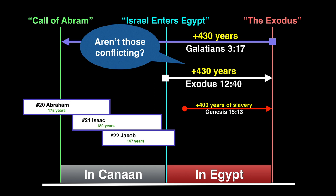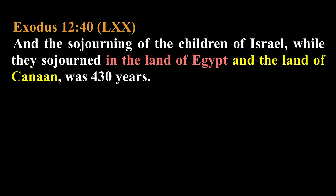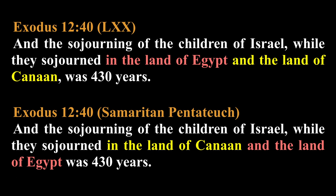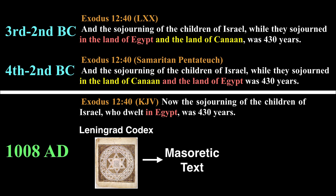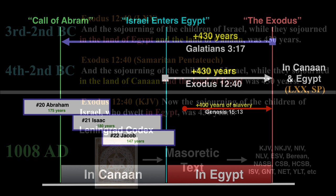Exodus 12:40 in the Septuagint reads, And the sojourning of the children of Israel, while they sojourned in the land of Egypt and in the land of Canaan, was 430 years. This is also confirmed in the Samaritan Pentateuch translation. And since the Septuagint and the Samaritan Pentateuch predate the Leningrad Codex, which is the base for the Masoretic text, by over a thousand years, this tells us that the Masoretic scribes dropped the Canaan part from Exodus 12:40, which led to all modern translations being incorrect.